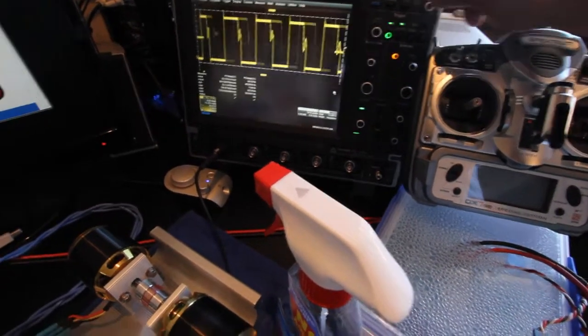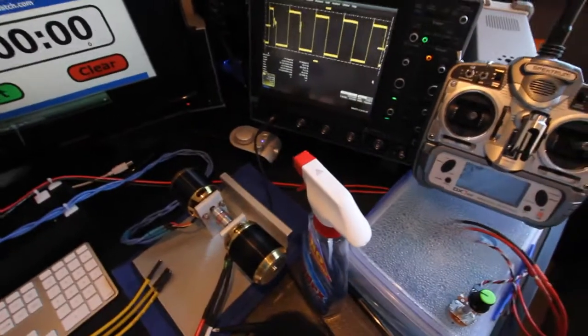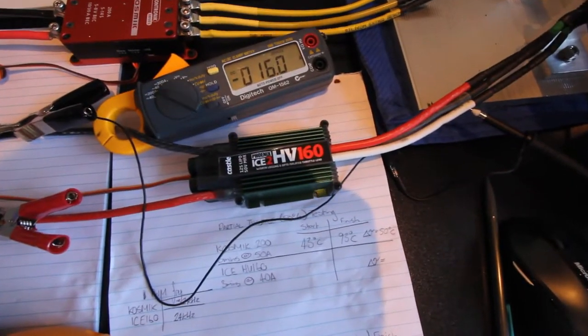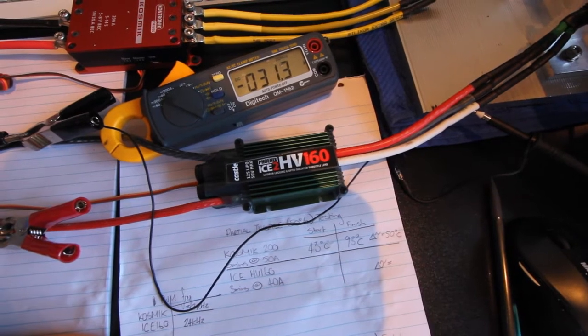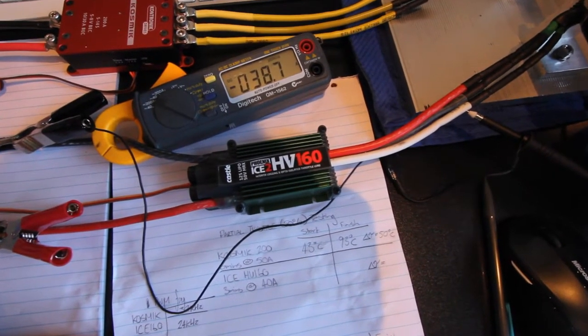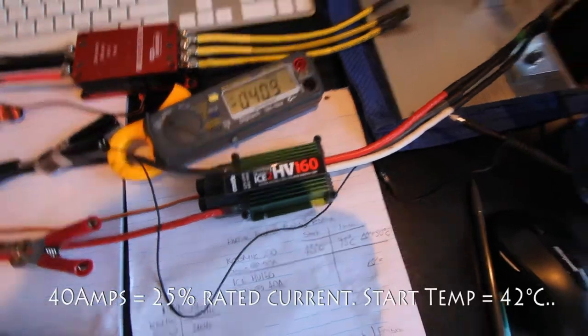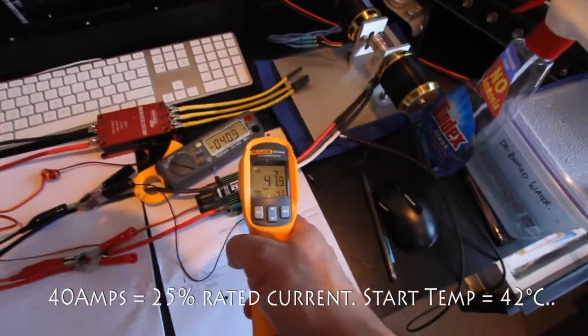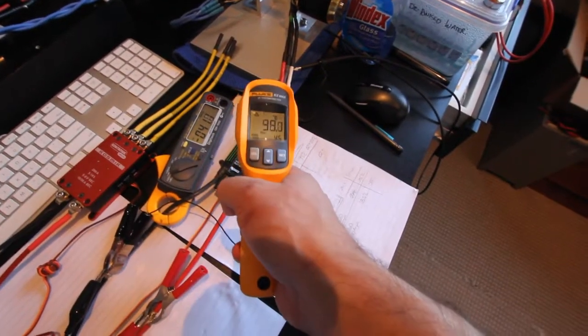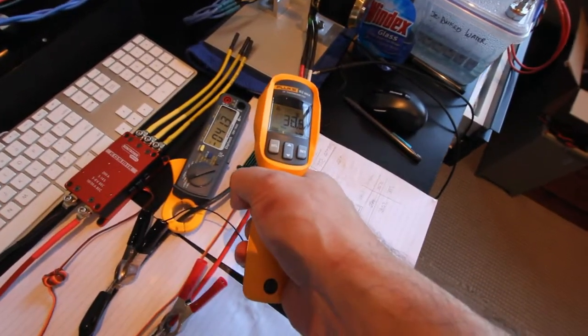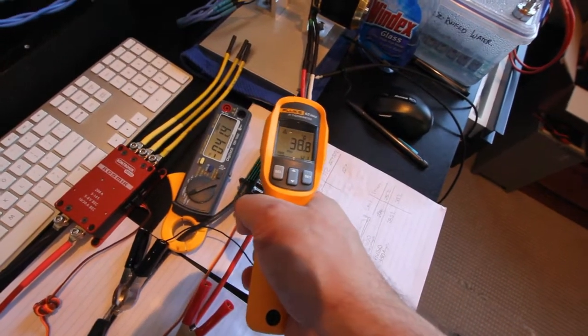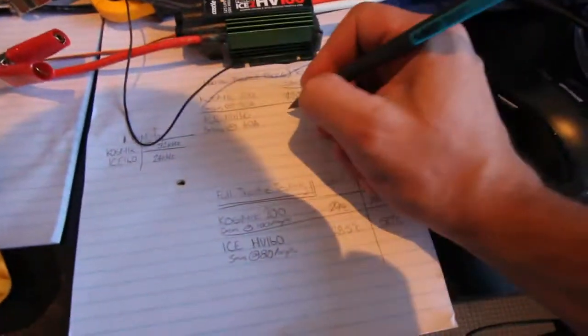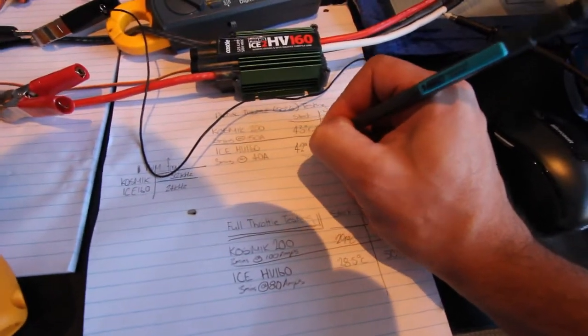That's our 50%, now I'll just increase the load. 40 amps, 40 amps, 40 amps load. Start the timer. Alright our start temperature is 44 degrees, or our start temperature, yeah it's about 42 degrees Celsius. Alright. 42 degrees Celsius.